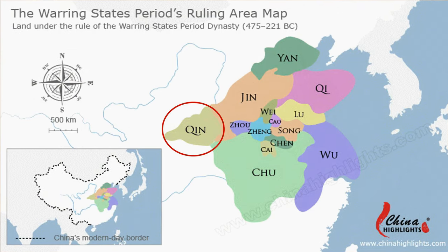During this time, China was not really one country, but was rather seen as lots of different states, all controlled by different rulers and lords. Each state had its own rules, laws, sometimes even writing and currency. There were constant battles between the states, where lands would be conquered or taken over by the more powerful state and army.